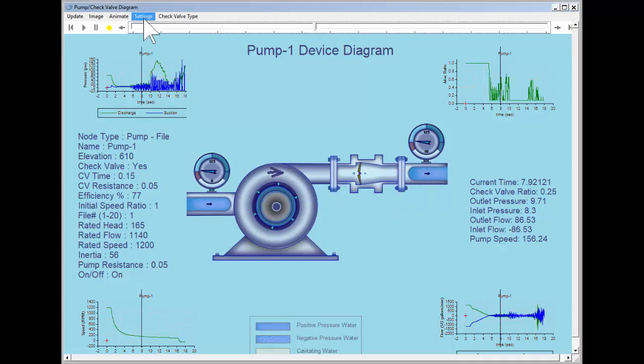We can also change the color of the pressure gauge needles so they turn red when the pressure is below atmospheric pressure. We can see the new color coding for the needles if we use the slider to drag the animation frame to a time when negative pressure occurs.